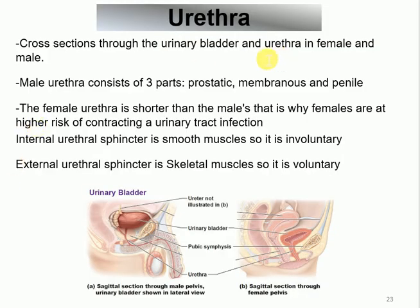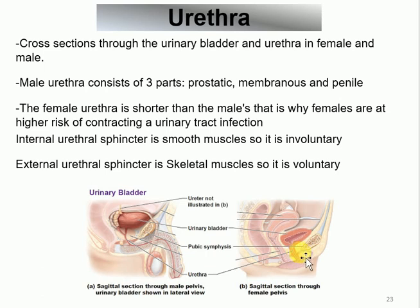The second reason females are more prone to UTIs is that the urethral opening in females is very close to surrounding openings such as the anal opening, increasing pathogen exposure. In males, the penile opening is anatomically farther from other organs. The external urethral sphincter is located inside the urogenital membrane/diaphragm in both males and females, and it is voluntary (skeletal muscle).